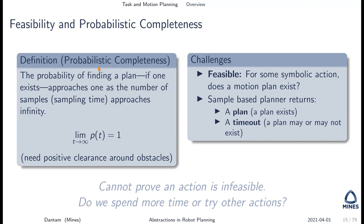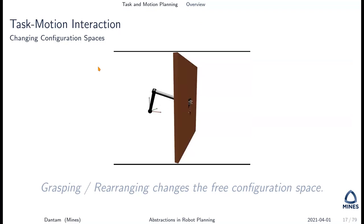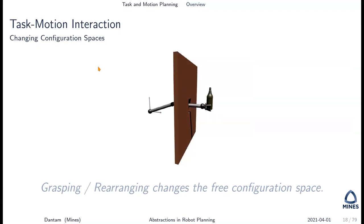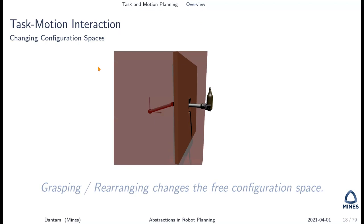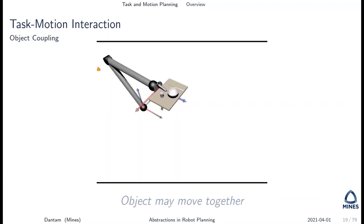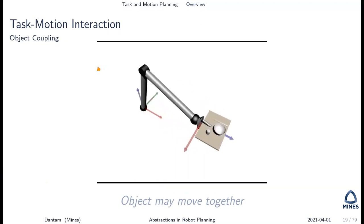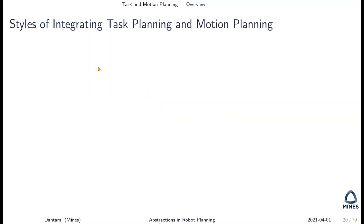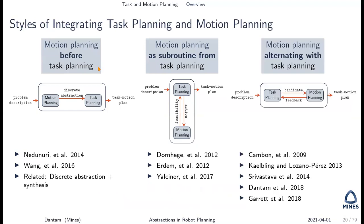We cannot currently prove that an action is infeasible, so the question becomes: do we spend more time on motion planning for a particular action, or explore other parts of the space? When the robot picks something up, this changes the free configuration space. And when the robot moves a tray, objects stacked on it also move — we want to capture this coupling in task and motion planning.